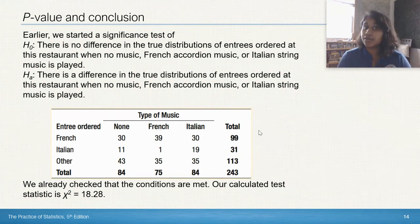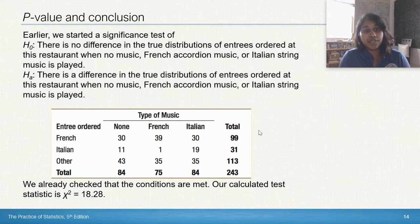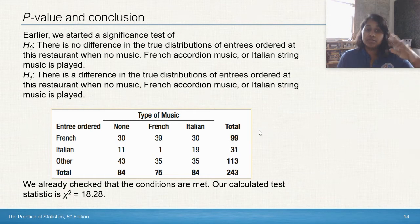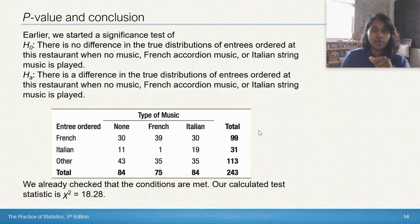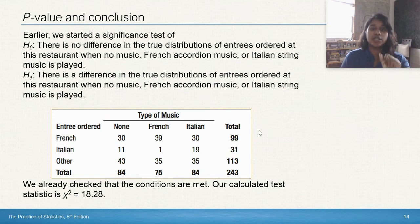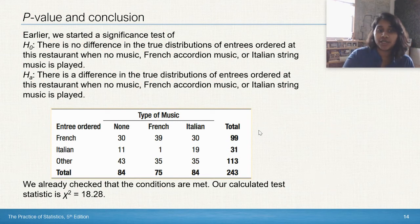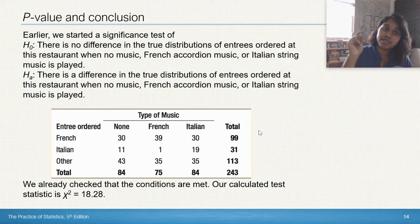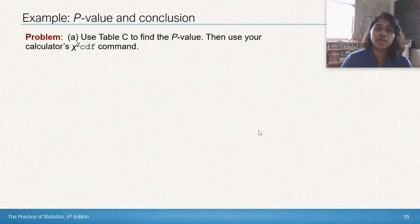Let's go ahead and run through this like a state plan do conclude. So here's our state, our null hypothesis. There is no difference. Our alternate hypothesis, there is a difference in the distribution of entrees when music is played. Probably since they didn't tell us anything else, we would have written that alpha is equal to 0.05. And then our plan, name that procedure, we would have done the chi-square test for homogeneity. And then we would have checked our conditions, random 10% large counts. They all match up, so we're good to go. And we got our chi-square, so there's our state plan do. Now let's do our conclude.